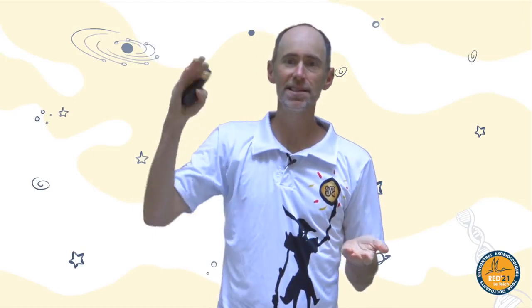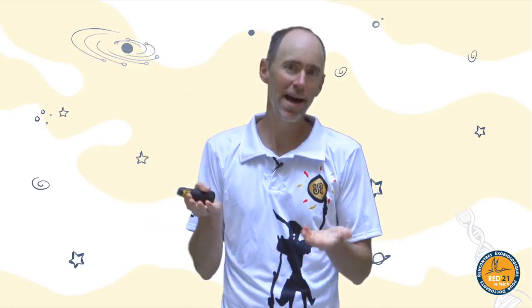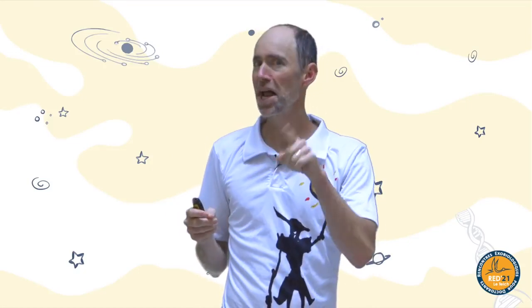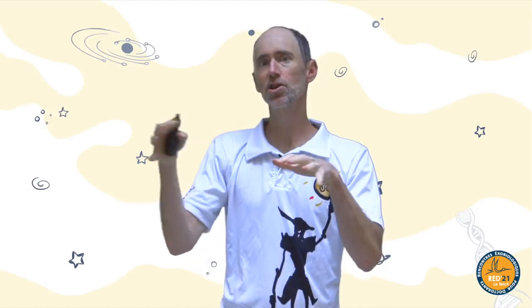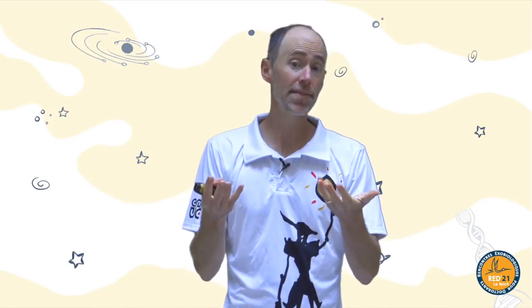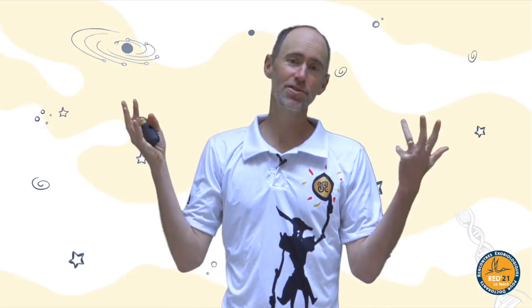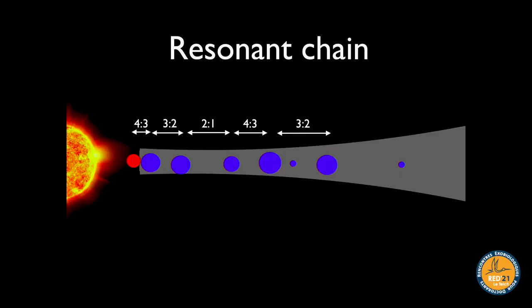This evolution generically leads to long resonant chains where the innermost planets are near the inner disk edge, and other planets are stacked outward with each pair in resonance. You might think: we don't observe a staircase period ratio distribution, so this can't be what happens. But wait — the story isn't over. This happens while the gas disk is present. The gas disk caused the migration, but then the gas goes away.